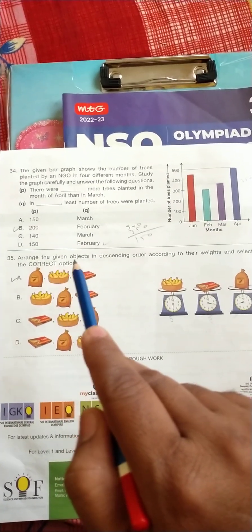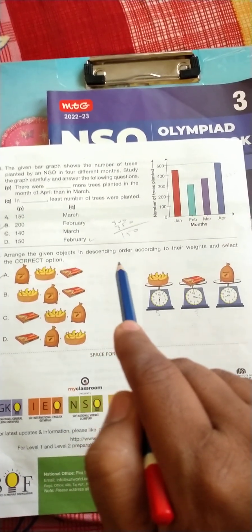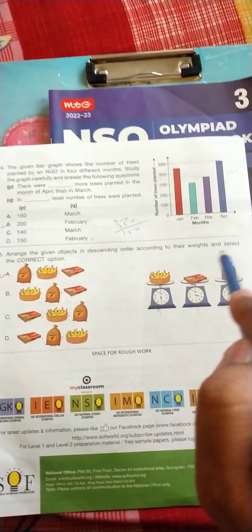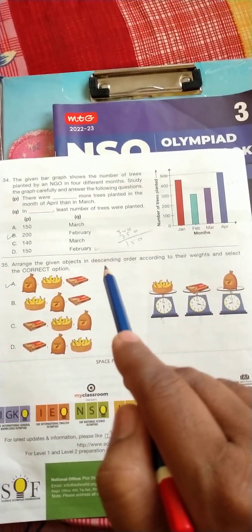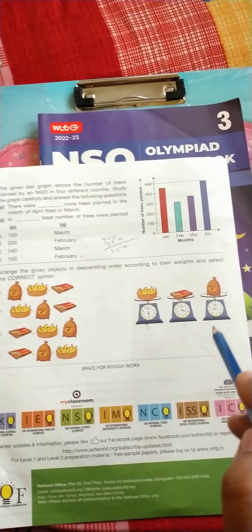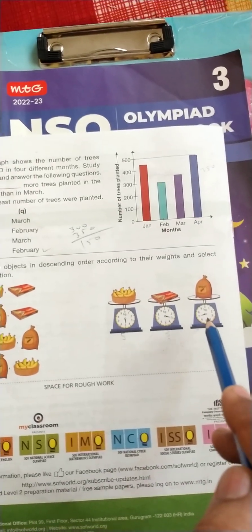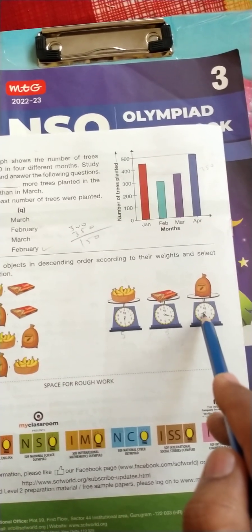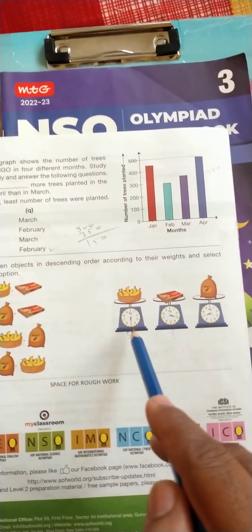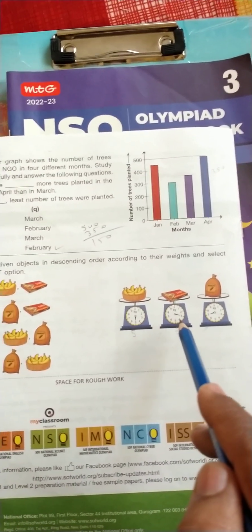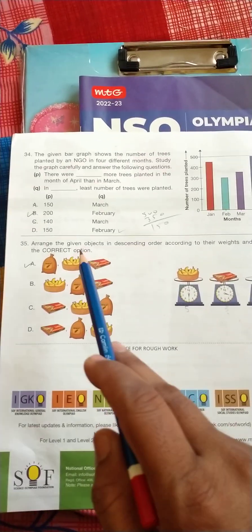Question number 35: arrange the given object in descending order according to their weight and select the correct option. So descending order - weight is more here is 7 kg, here is 5 kg, and here is 3 kg. So the correct option is A.